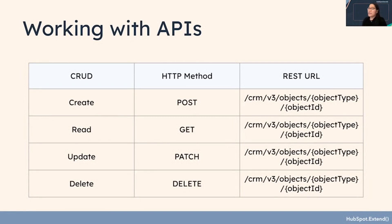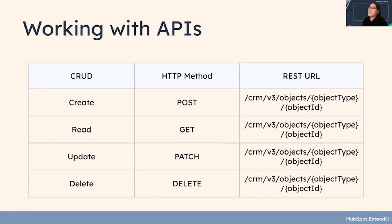With Create, the HTTP method is POST. With Read, the HTTP method is GET — we're getting a specific contact record. Update uses the HTTP method PATCH to update a specific contact record. And Delete uses the DELETE HTTP method to delete a specific contact record. The REST URL for HubSpot follows a pattern like /crm/v3/objects/{objectType}/{objectId}, and each CRUD operation maps directly to one of these methods.